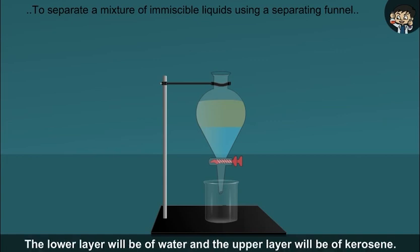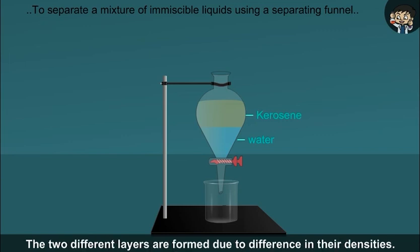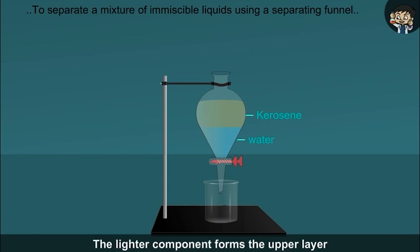The lower layer will be of water and the upper layer will be of kerosene. The two different layers are formed due to difference in their densities. The lighter component forms the upper layer and the heavier component forms the lower layer.